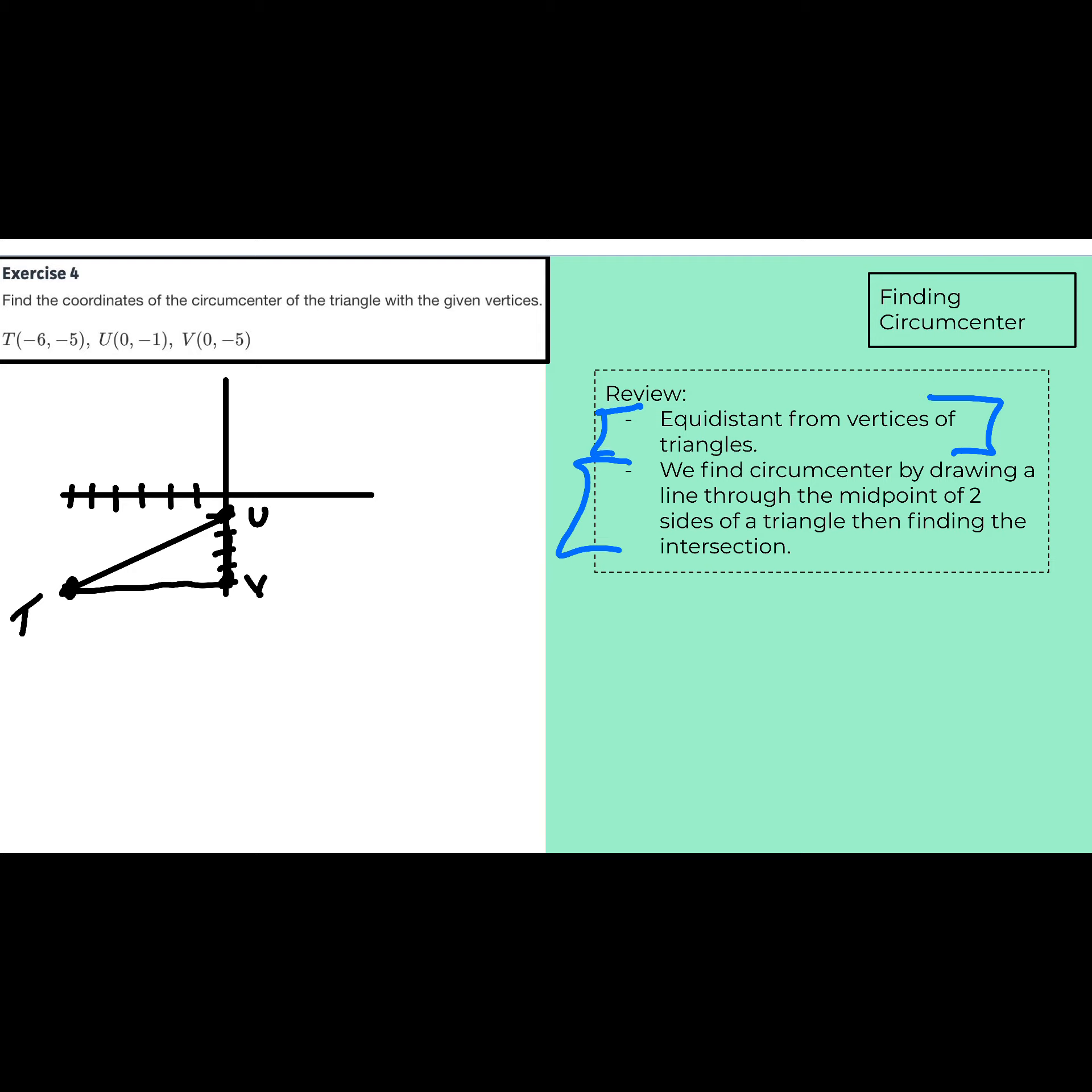So, if we look at UV, the midpoint would be right here, at 0, negative 3. And we would just need to draw a line through the midpoint. And then, the other line that we would want to look at the midpoint of would be TV, because that is a horizontal line. And the midpoint would be right here, at negative 3, negative 5.